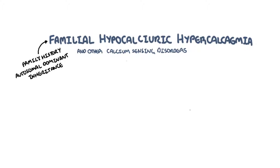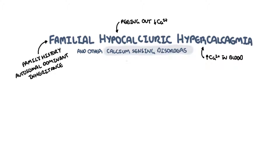Affected people typically present in childhood where they get hypocalciuria — peeing low amounts of calcium — despite having elevated calcium levels in the blood, hypercalcemia. The reason for these changes is due to problems with calcium sensing in the body. Familial hypocalciuric hypercalcemia is one type of calcium sensing disorder. Another type, a complete opposite, is autosomal dominant hypocalcemia, which we will touch on later on.